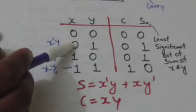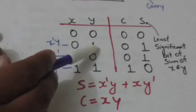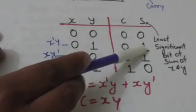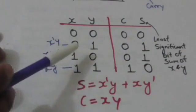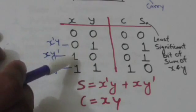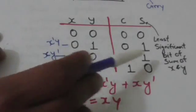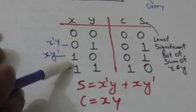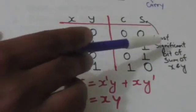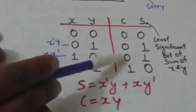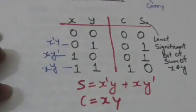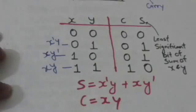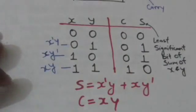When the value of X is zero and Y is one, the value of S would be one and no carry would be produced. The same applies when X is one and Y is zero. But when the value of both X and Y is one, the least significant bit of the sum would be zero and a carry is produced, so C would be one and S would be zero.